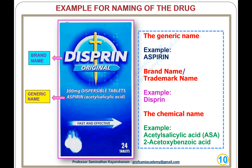Another example of drug naming: generic name — example: aspirin. Brand name or trademark name — example: Disprin. Chemical name — example: acetylsalicylic acid, or 2-acetoxybenzoic acid.